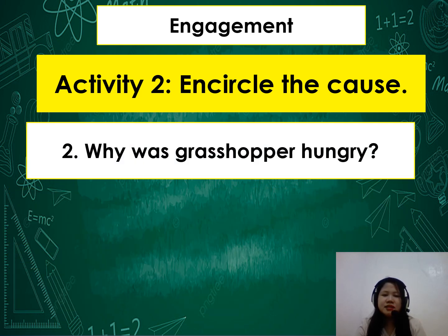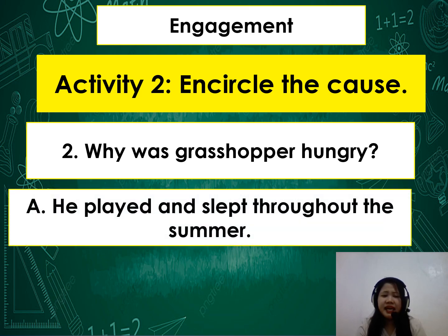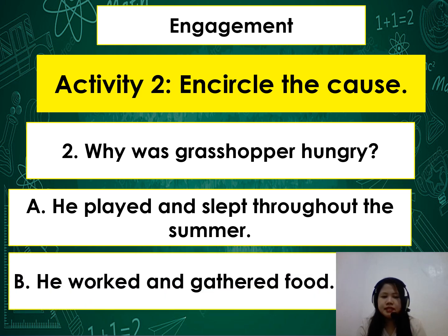Number 2: Why was the grasshopper hungry? A — he played and slept throughout the summer; or B — he worked and gathered food. Encircle your answer. The correct answer is letter A: he played and slept throughout the summer.